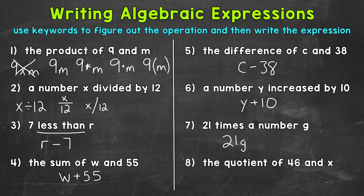Lastly for single-operation expressions, number 8: the quotient of 46 and X. 'Quotient' is our keyword — it means the answer to a division problem. So this is going to be division: 46 divided by X. We can represent this using a fraction, 46 over X. So there are some examples of writing expressions with one operation.